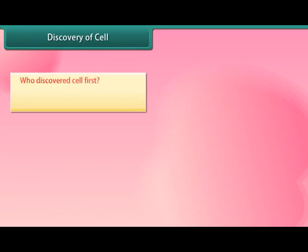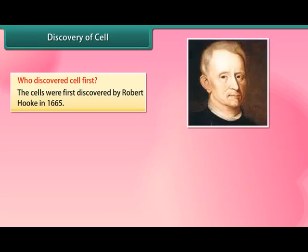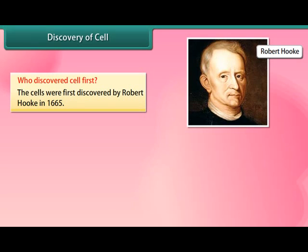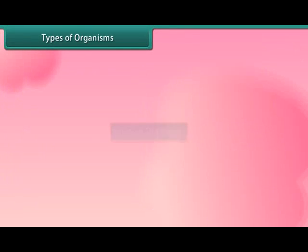Who discovered the cell first? The cells were first discovered by Robert Hooke in 1665. He examined thin slide types of organisms.